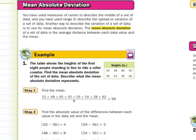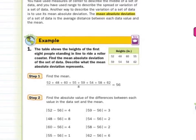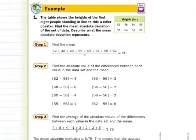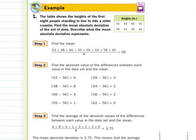In real world example 1, the table shows the heights of the first 8 people standing in line to ride a roller coaster. Find the mean absolute deviation of the set of data. Describe what the mean absolute deviation represents. Step 1: find the mean. Take these values, add them up, divide by 8, and get a mean of 56.